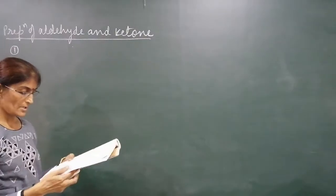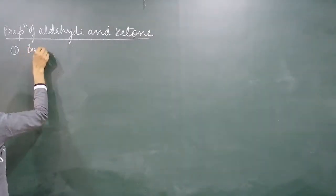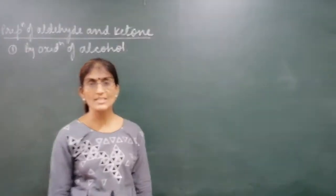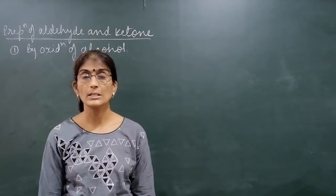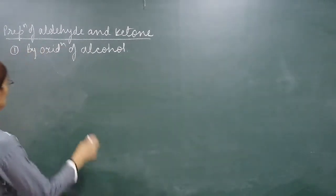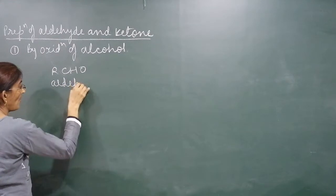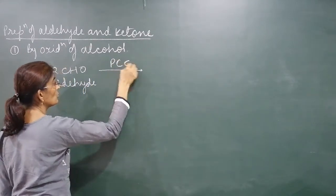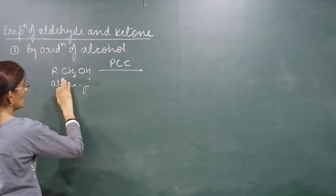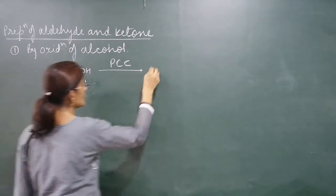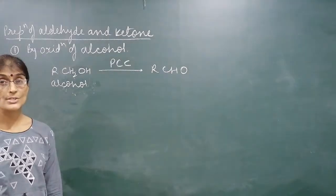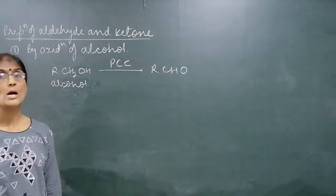The first method of preparation is from oxidation of alcohol. This we had done in the alcohol chapter. Primary alcohol undergoes oxidation to give aldehydes. We use PCC - pyridinium chlorochromate - which is a mild oxidizing agent. It oxidizes primary alcohol to give RCHO. PCC is a weak oxidizing agent; if we use a strong oxidizing agent, it will be converted into carboxylic acid.